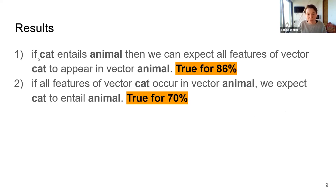They found that for their first hypothesis, if cat entails animal, then we can expect all features of vector cat to appear in vector animal, to be true for 86% of the cases. So this was quite a strong signal that they found for this distributional inclusion hypothesis to be true.